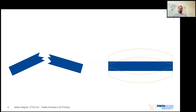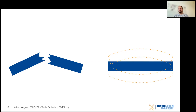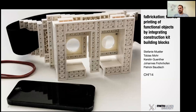To expand 3D printing possibilities, researchers have explored integrating other materials. An early focus was on speeding up prototyping by substituting some printed parts with pre-made components. One example is 'FabricationFAST: Fast 3D Printing of Functional Objects by Integrating Construction Kit Building Blocks' by Mueller et al. at CHI 2014, which used Lego bricks. They developed software letting designers specify which parts require high-fidelity 3D printing and which can be replaced with construction bricks, dramatically reducing print time.